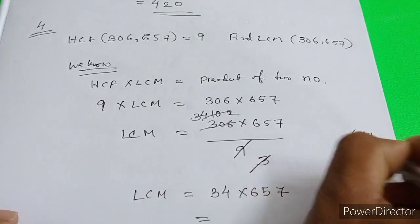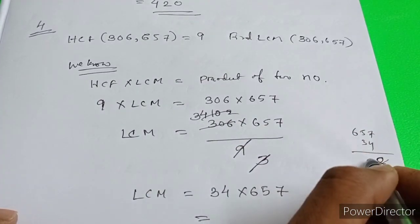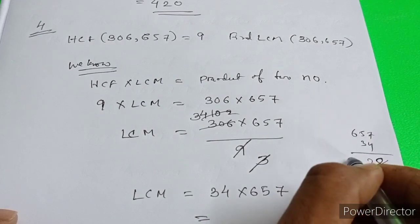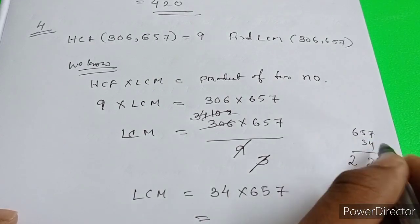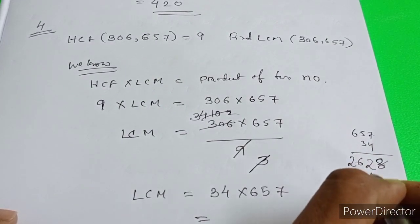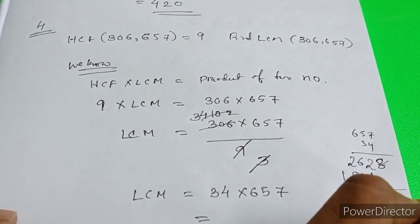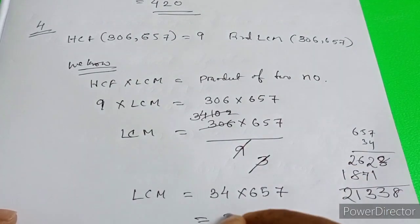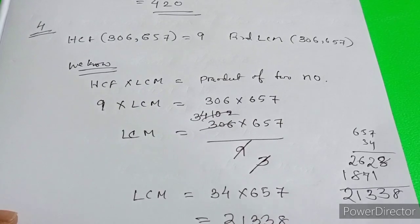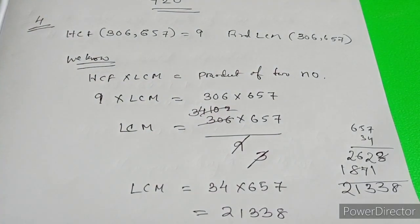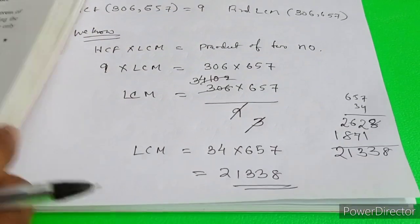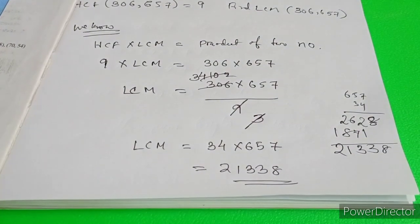34 into 657: 7 times 4 is 28, carry 2. 5 times 4 is 20, plus 2 is 22, carry 2. 6 times 4 is 24, plus 2 is 26. Continuing: 15, 17, 18.